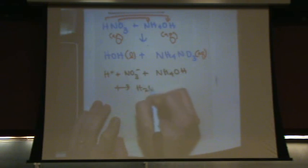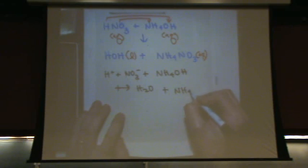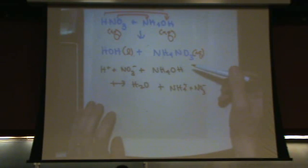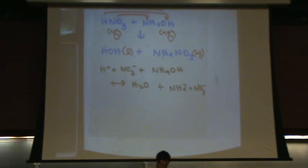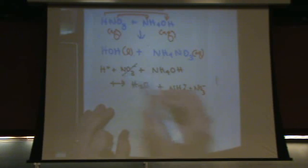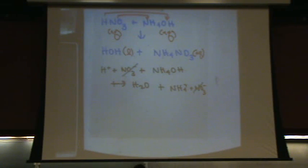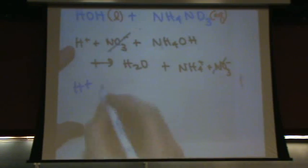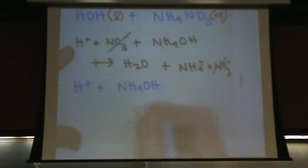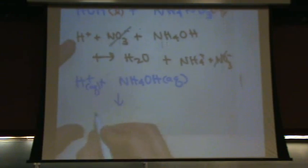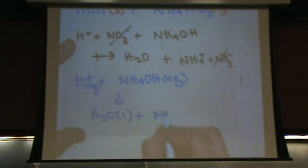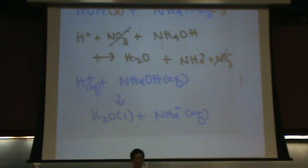So we get H⁺ plus NH4OH goes to H2O liquid — you can't separate liquids, they're weak electrolytes or non-electrolytes — plus NH4⁺ plus NO3⁻. I can separate that one because it's a pure ionic compound, and all pure ionics are strong electrolytes. The nitrates cancel on both sides. So my final net ionic equation is H⁺ (aq) plus NH4OH (aq) goes to water (l) plus NH4⁺ (aq). I would consider this a medium difficulty question.